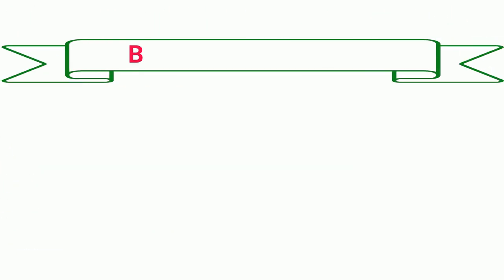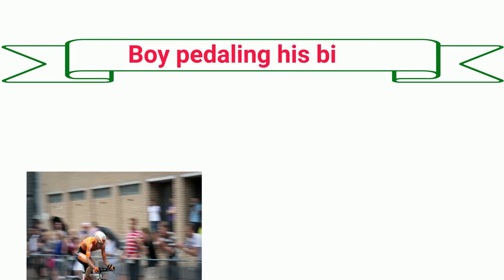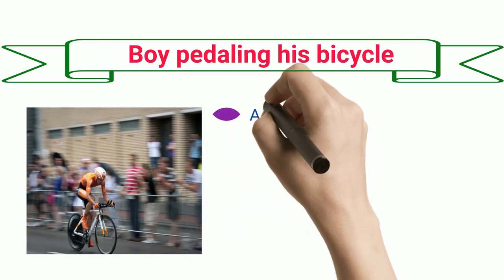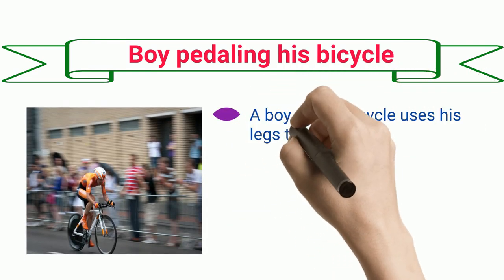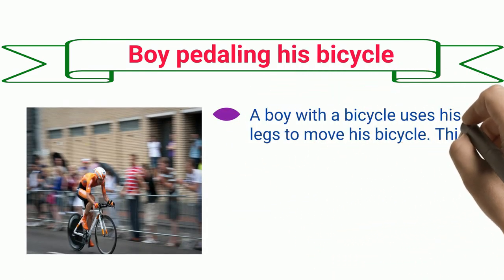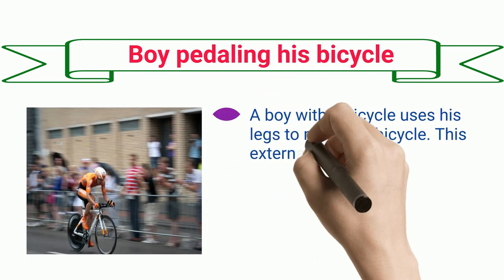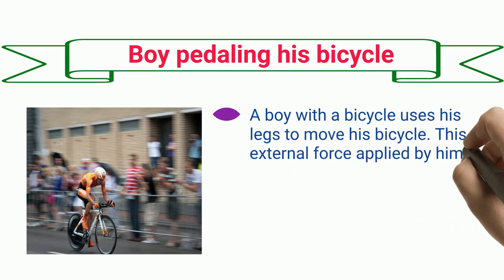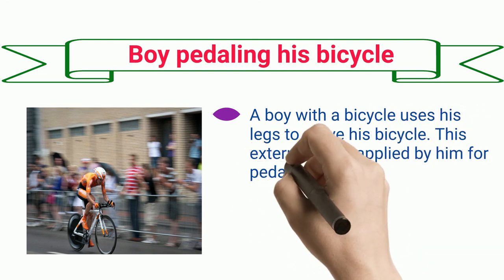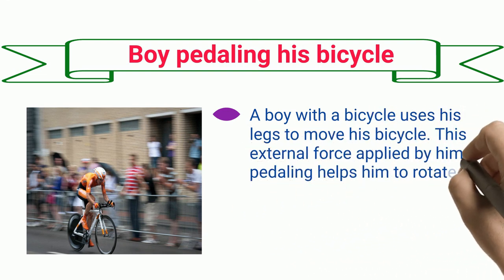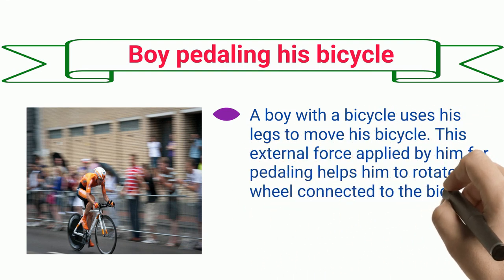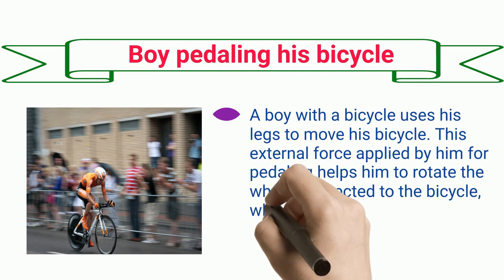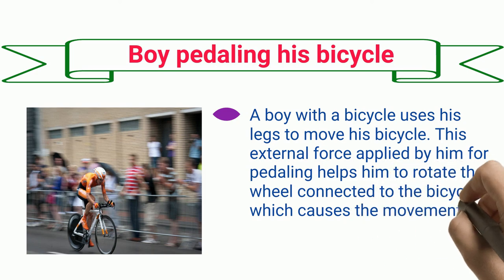Boy pedaling his bicycle. A boy with a bicycle uses his legs to move his bicycle. This external force applied by him for pedaling helps him to rotate the wheel connected to the bicycle, which causes the movement of the bicycle.